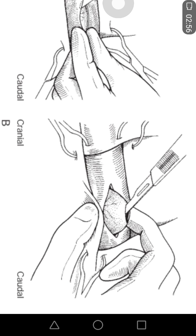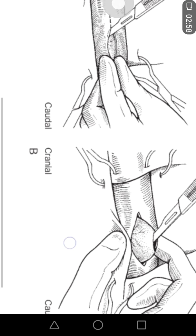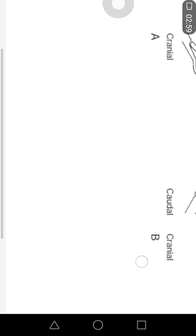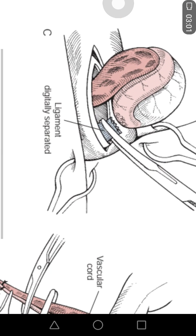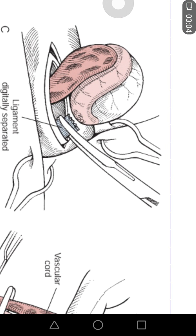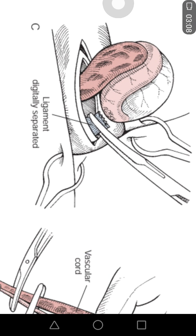The testes are pulled out through the opening of the tunica vaginalis. In the next step, once the testes are grabbed out, the ligament of the tail of the epididymis is broken and separated. The testes along with the spermatic cord are then freed from the scrotum through the pre-scrotal incision.